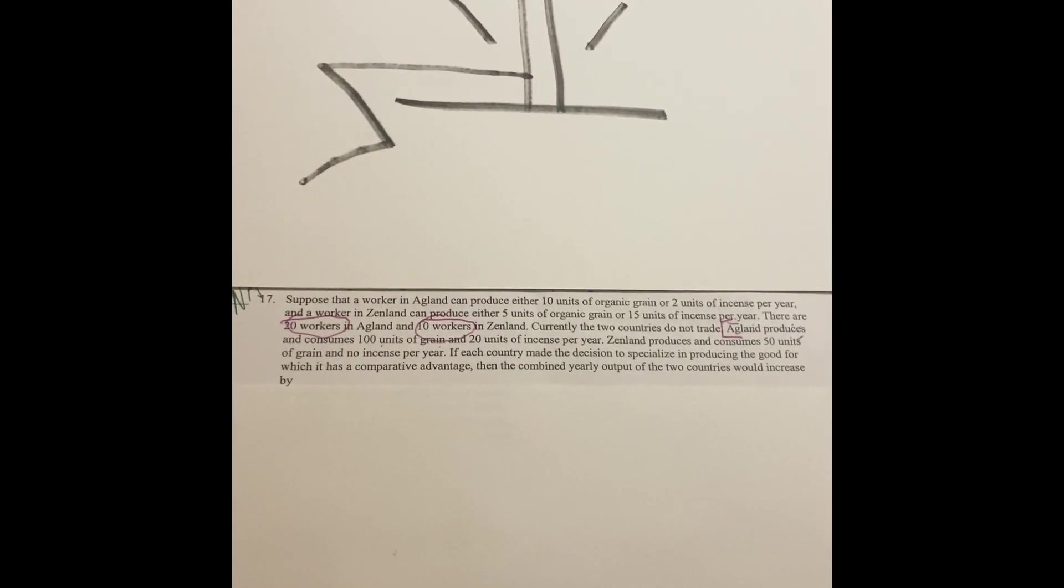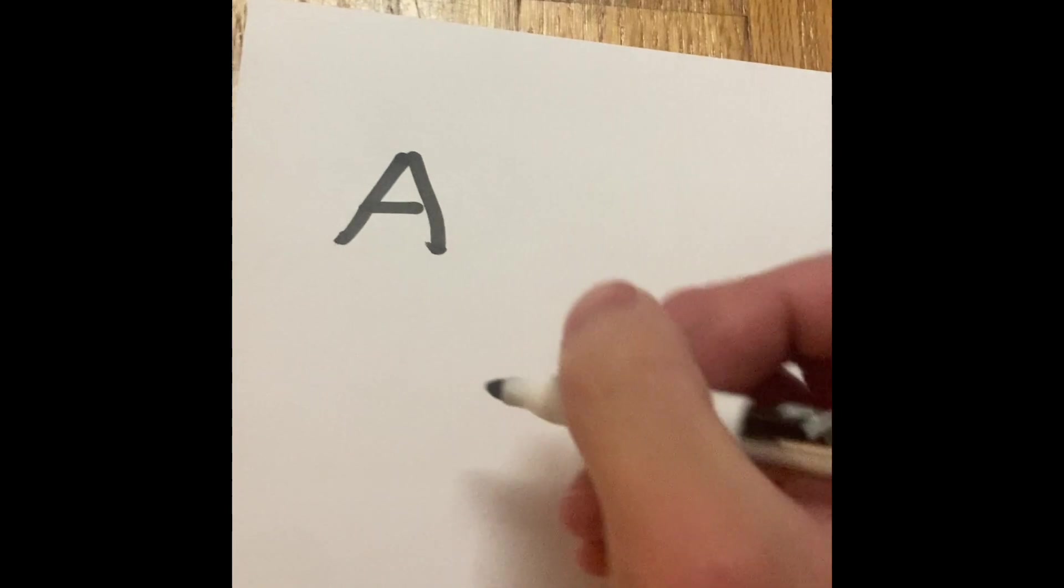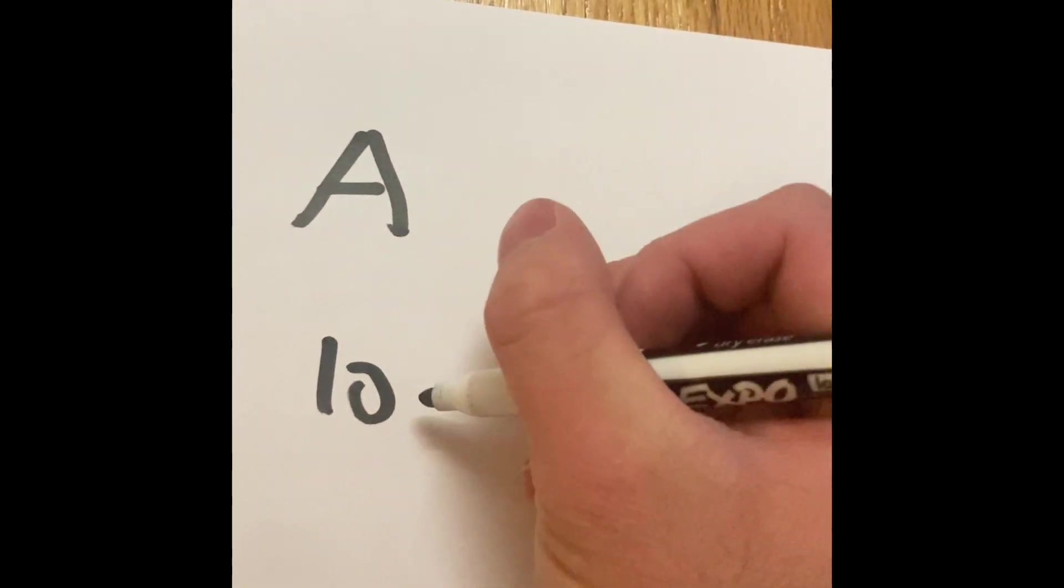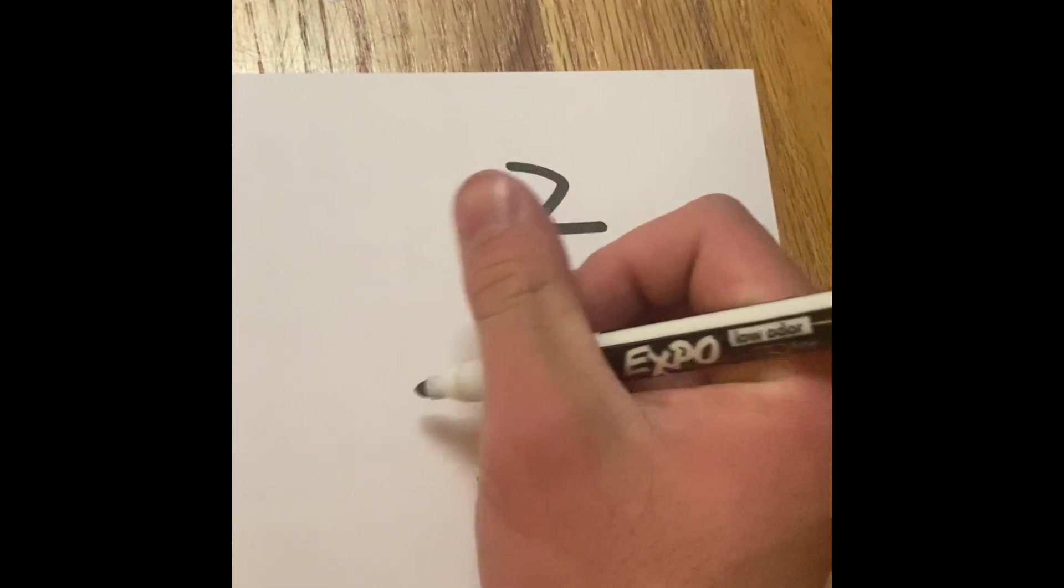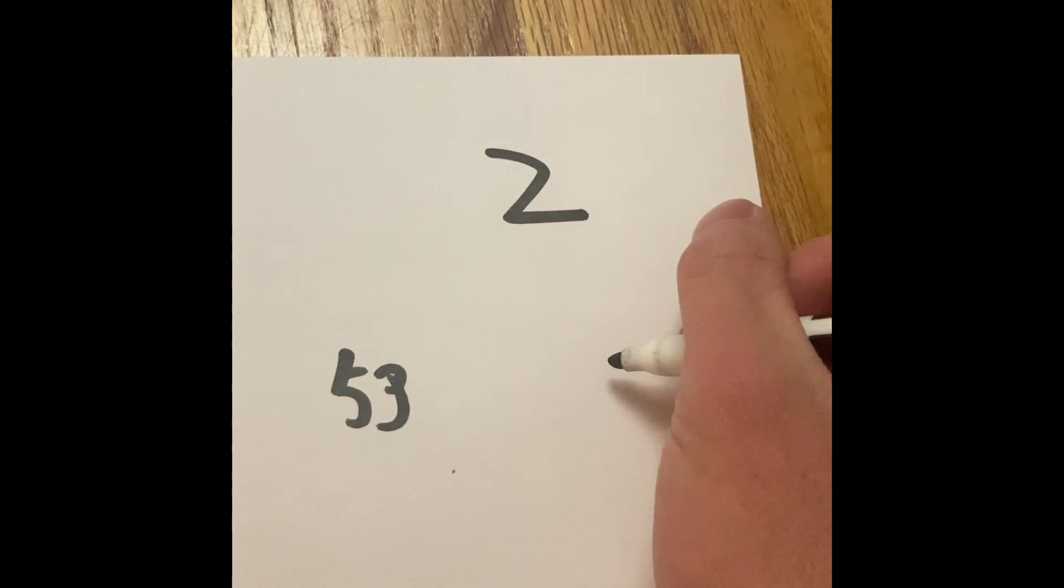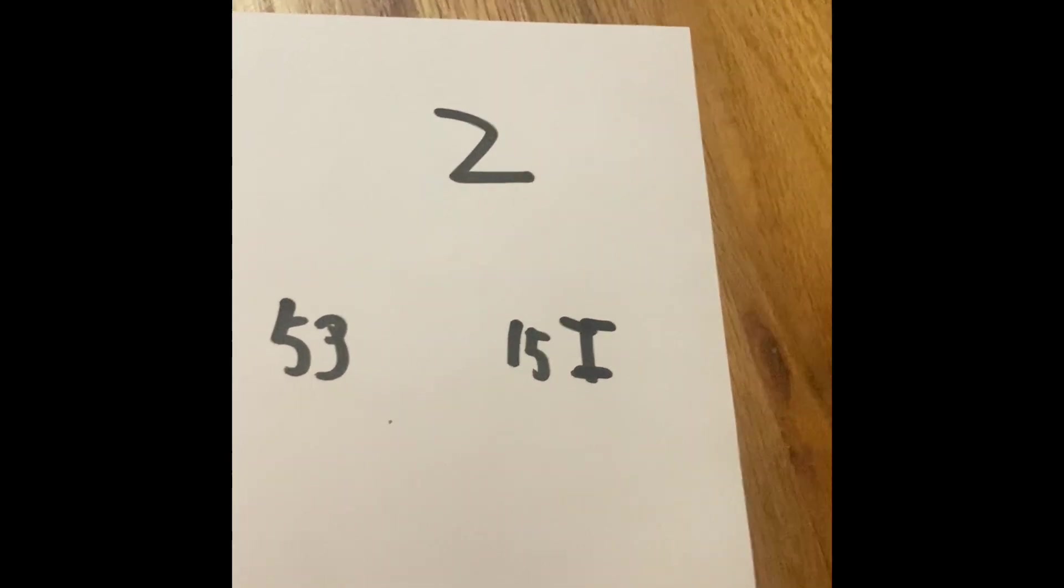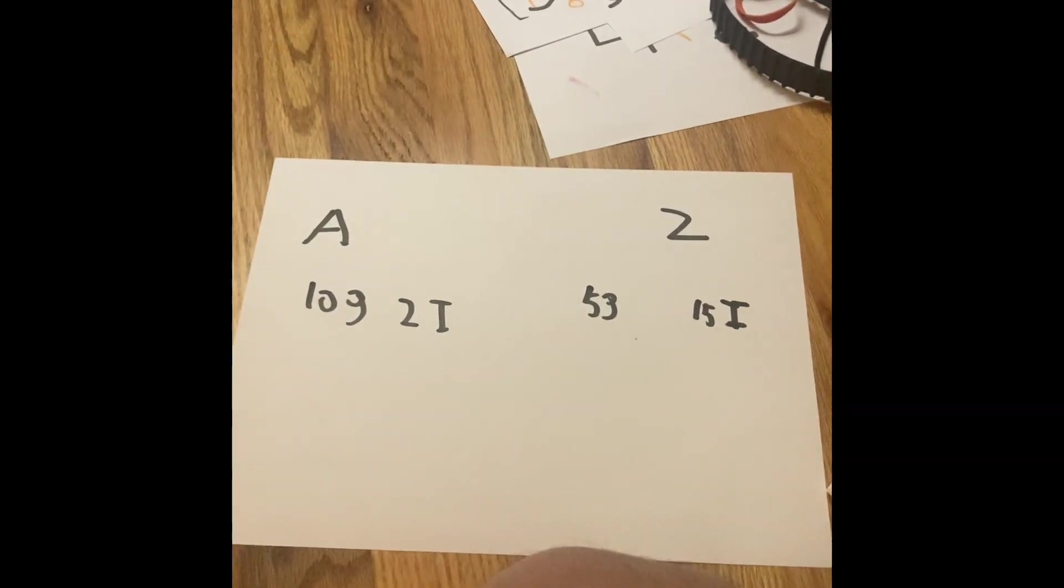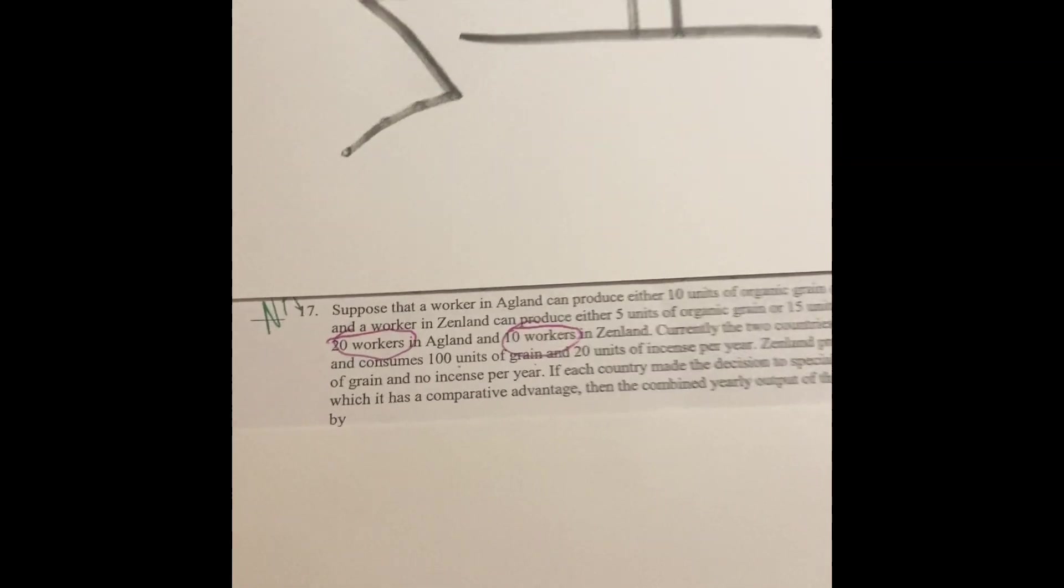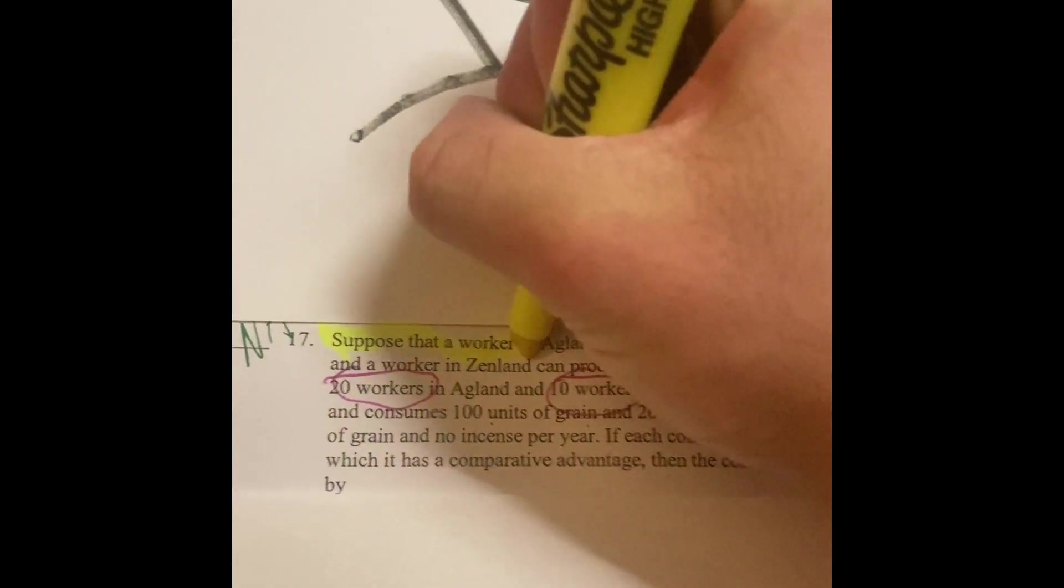So that is the first thing we got to think about. What do they both specialize if they do not trade? For Agland, we already said that they are going to produce 10 units of organic grain or 2 units of incense. But for Zenland, they are going to produce 5 units of grain or 15 units of incense. But the thing about this problem which makes it different is not only we are trying to find out what country makes what, but the number of workers is going to change everything.